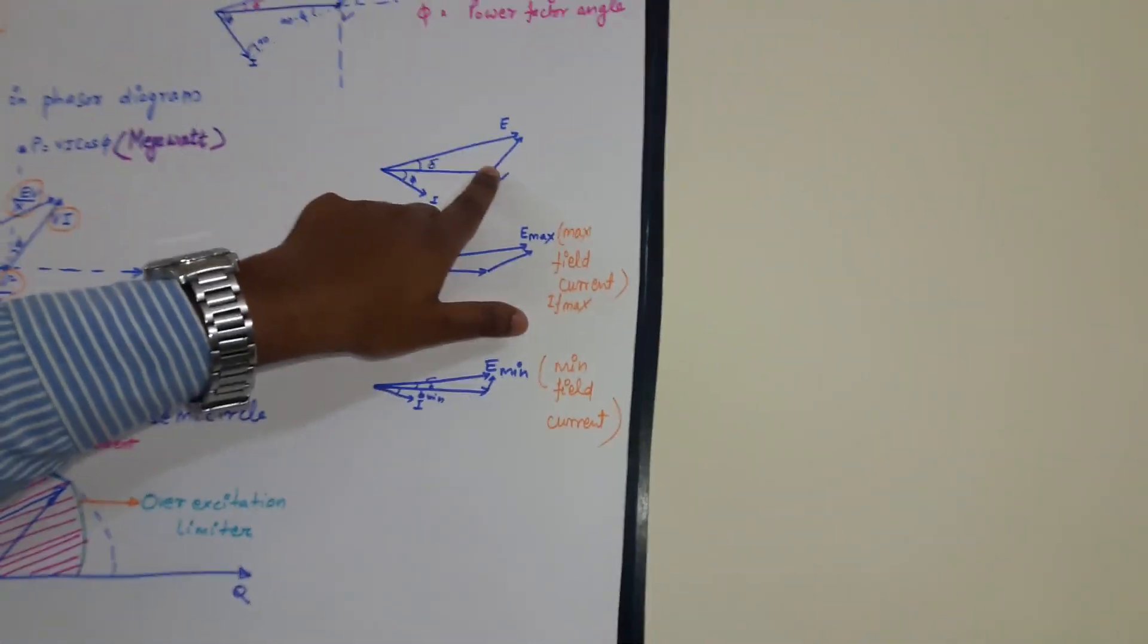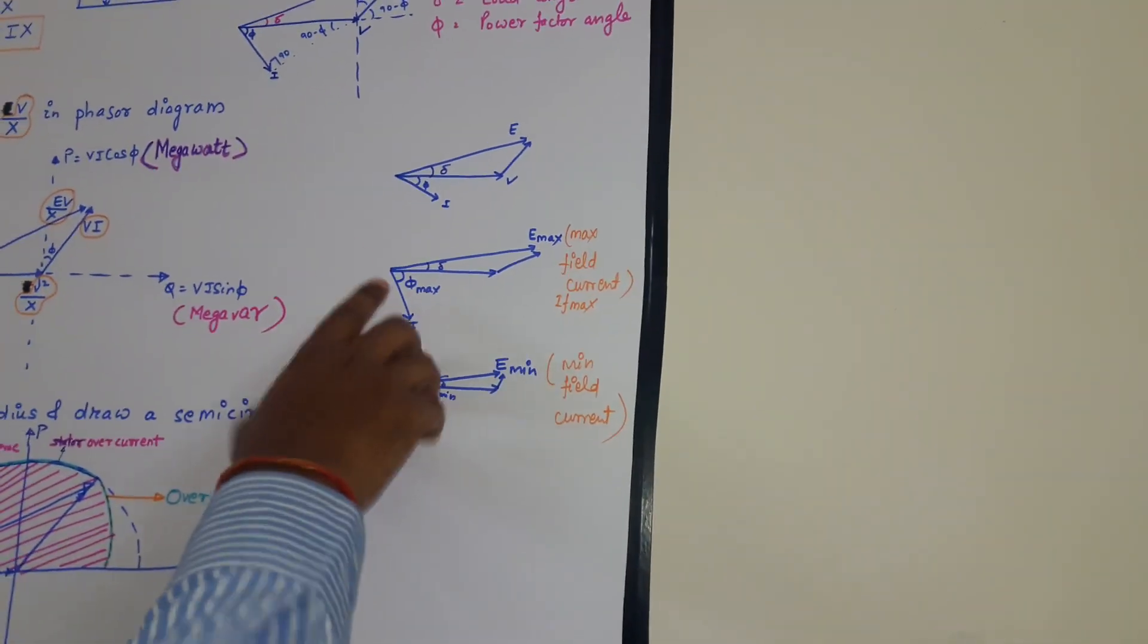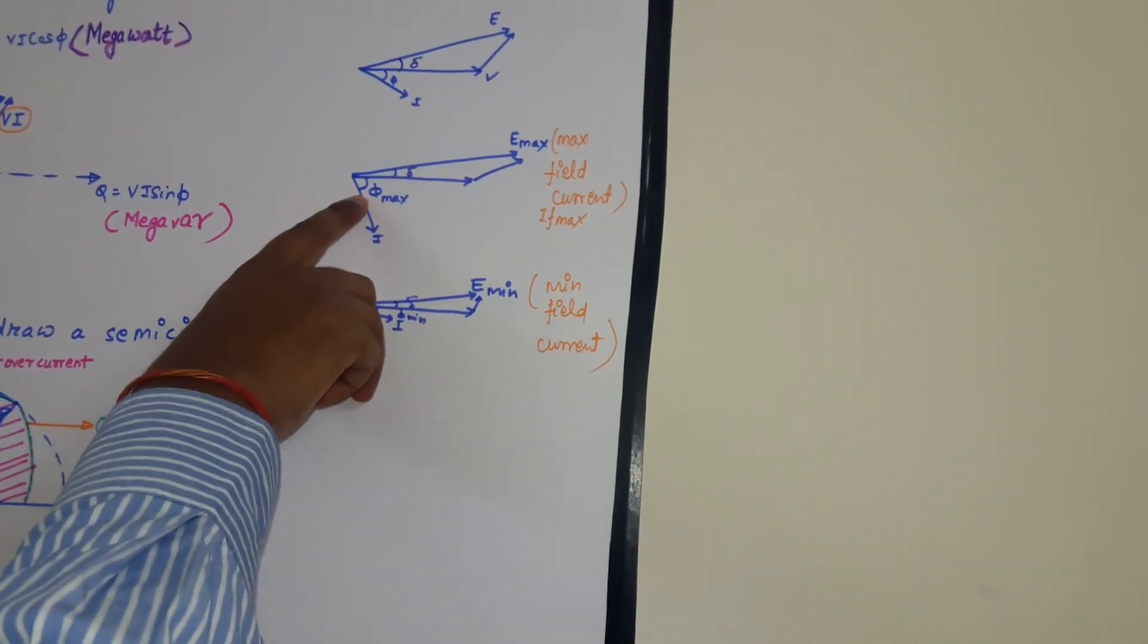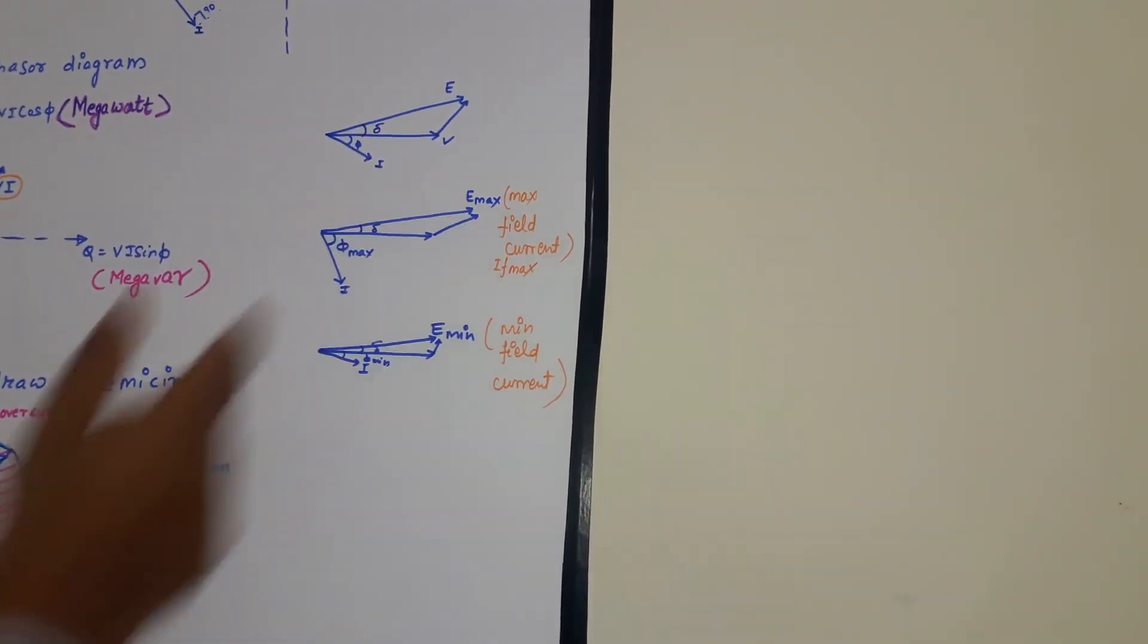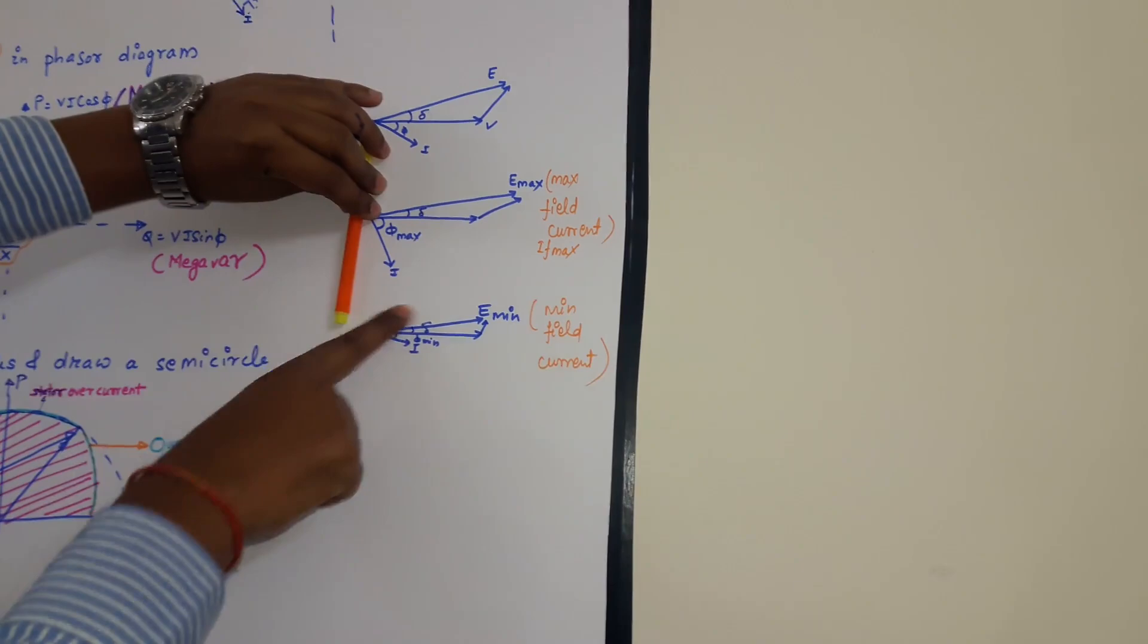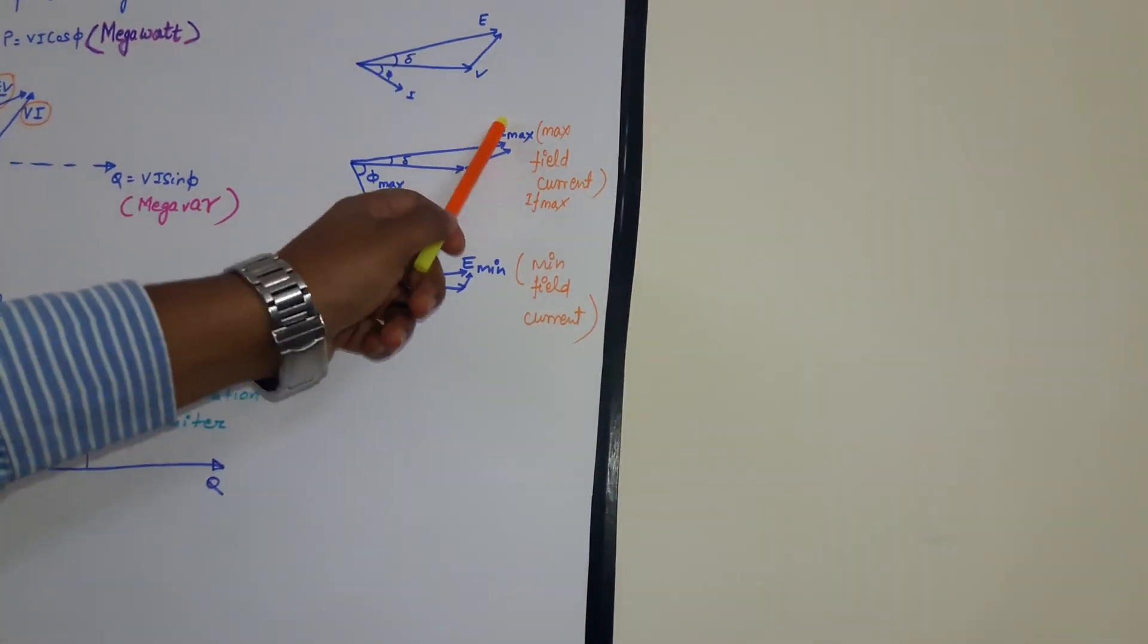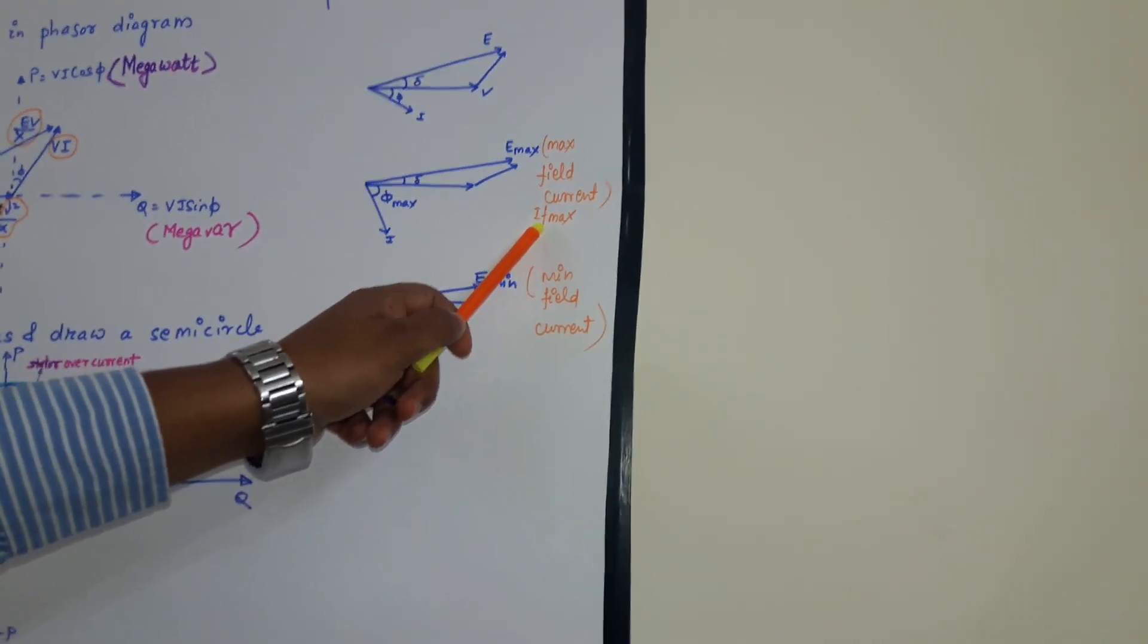When generator is operating at suppose V and E voltage, so suddenly if load increases then my phi, this power factor angle will also increase. And suppose if phi is increasing, that means I have to give more field current to maintain my E. Because phi is shifting to this direction, so my IX it will be shifting to this direction in order to make perpendicular with I. So the length of E is increasing. And if the length of E is increasing, from where we are getting E? We are getting E from the field current. So that AVR will regulate to send more field current to the generator.